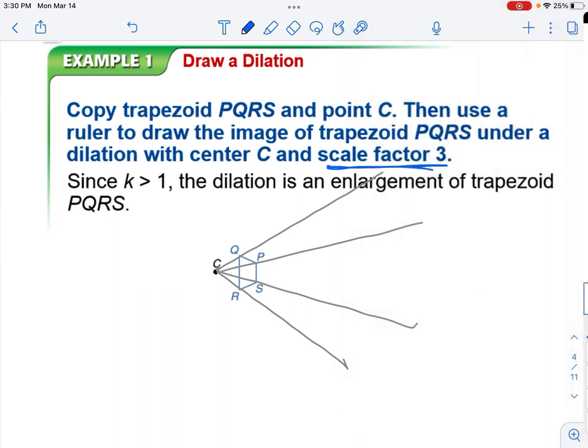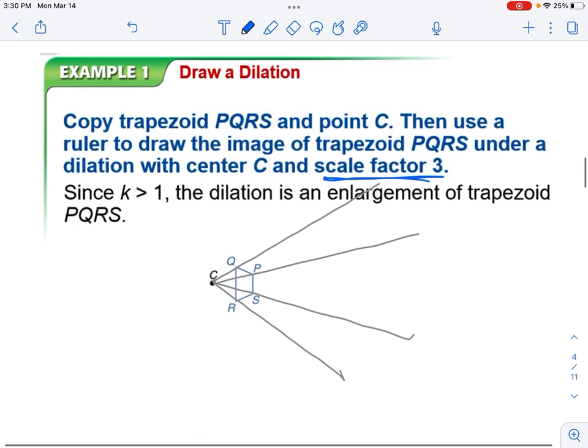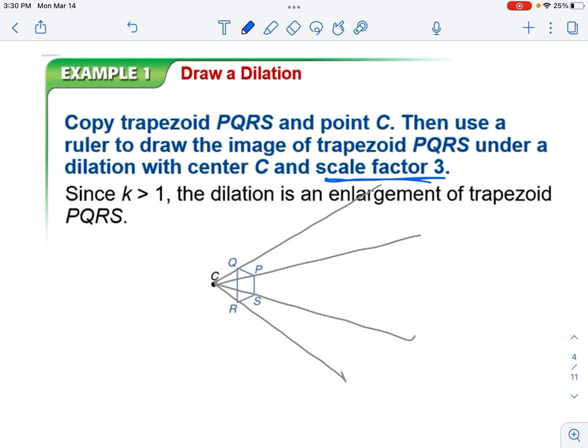And that gives me 2.75. So I'm now going to put a point and call it Q' at 2.75. And this is Q'.